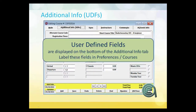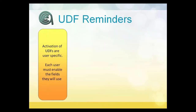The next area is user defined fields. You can modify and use these for your own purposes. There are user defined fields on the name, the course, the registration, and also on the firm and instructor — so multiple user defined fields across the system.